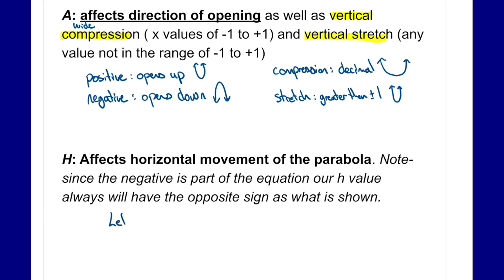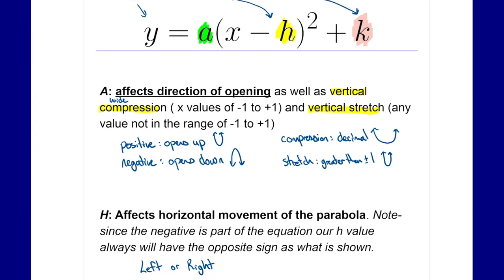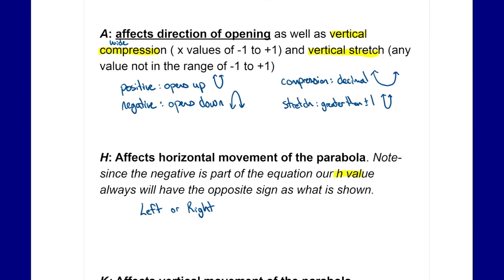The h value affects the horizontal movement of the parabola — moving to the left or to the right. One thing to note: since the equation itself has a negative for h, that means our h value will always have the opposite sign from what is shown. If we see a negative in the equation, our h value is positive; if we see a positive, our h value is negative. That is very important to remember.